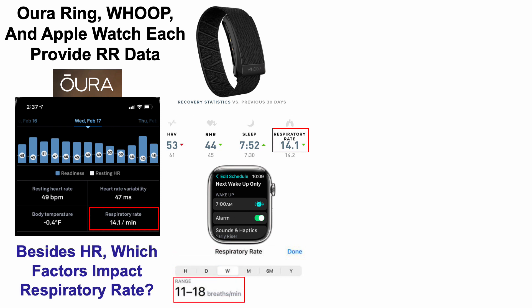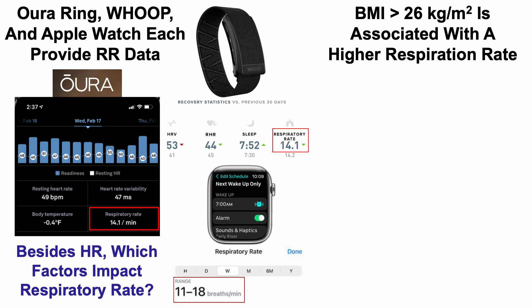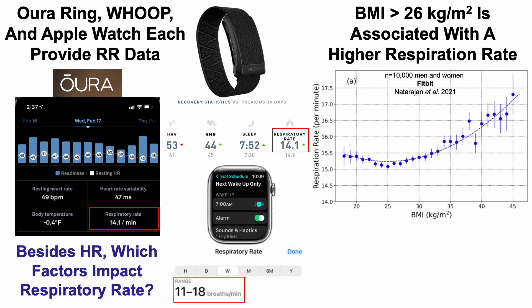Besides heart rate, which factors impact nighttime sleeping respiratory rate, with the goal of optimizing it to below 16 breaths per minute? Having a relatively higher BMI — specifically greater than 26 kg/m² — is associated with a higher respiratory rate. This is from the same study of 10,000 men and women from Fitbit data, with respiratory rate on the y-axis plotted against BMI on the x-axis. As BMI exceeds 26 kg/m², respiratory rate increases correspondingly. The lowest respiratory rate was found at a BMI of about 25, and notably, lower BMI is not necessarily better — people with BMIs below 20 had higher respiratory rates than those with a BMI of 25.